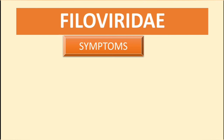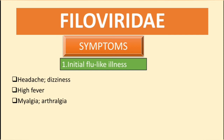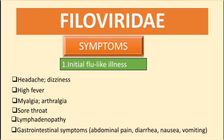Now let's talk about the symptoms of the Ebola and Marburg viruses. The symptoms can be classified into two groups: firstly, initial flu-like symptoms, and secondly, severe viral hemorrhagic fever with bleeding diathesis. The initial flu-like symptoms include headache, dizziness, high fever, myalgia, arthralgia, sore throat, lymphadenopathy, and gastrointestinal symptoms such as abdominal pain, diarrhea, nausea, and vomiting.